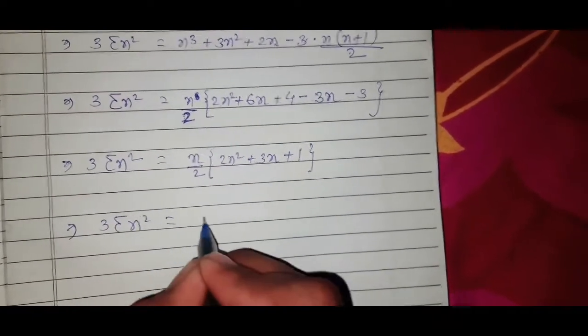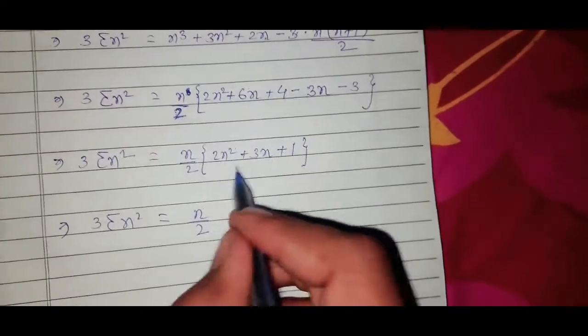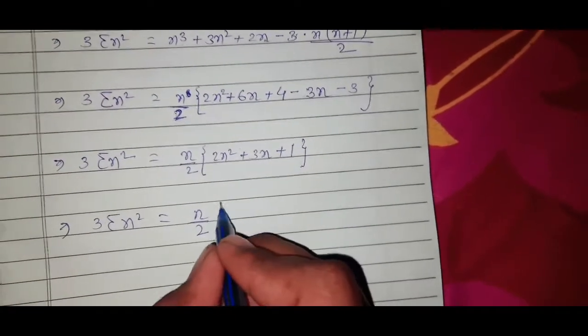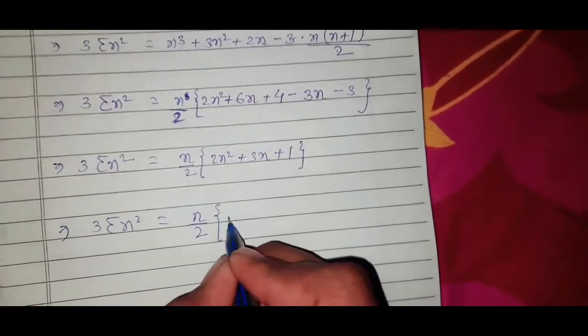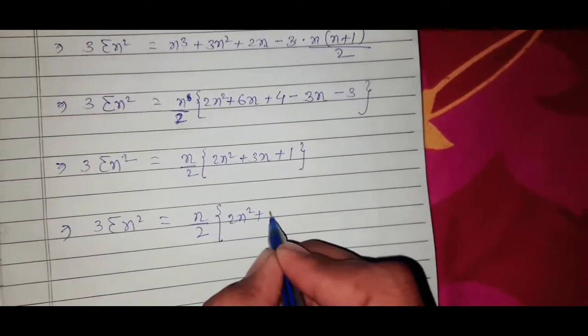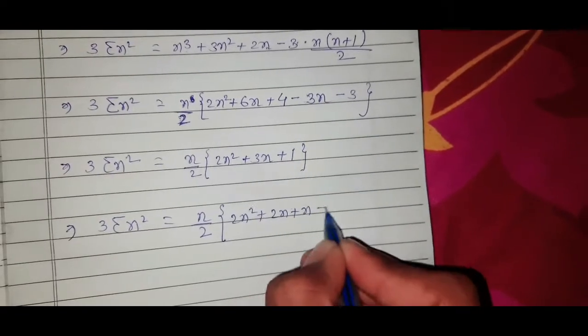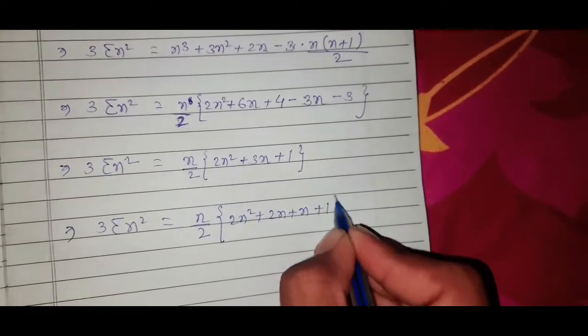So 3·Σn² = (n/2)(2n² + 2n + n + 1). We now factor the bracket by middle term splitting: (n/2)(2n(n+1) + 1(n+1)).